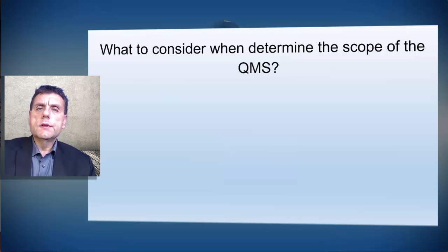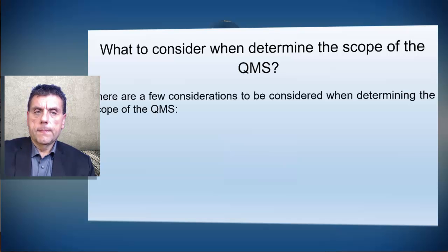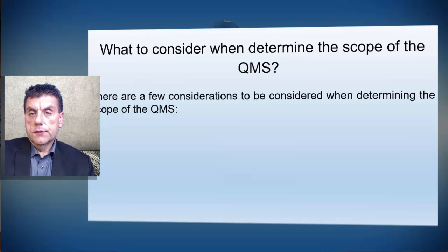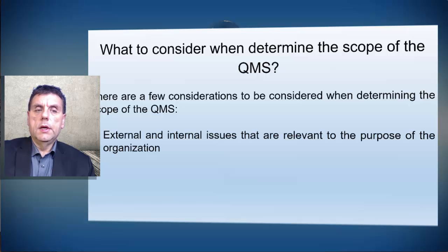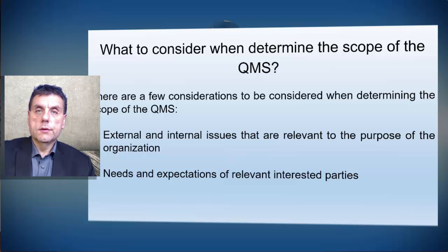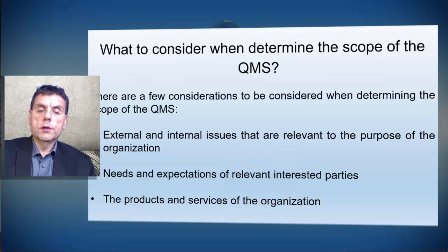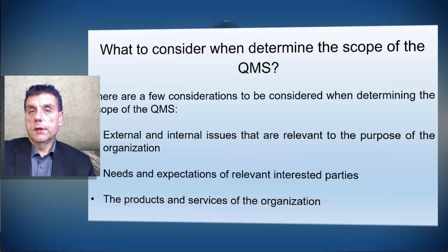What should be considered when determining the scope of the Quality Management System? There are a few considerations: external and internal issues that are relevant to the purpose of the organization, needs and expectations of relevant interested parties, and the products and services that the organization provides.